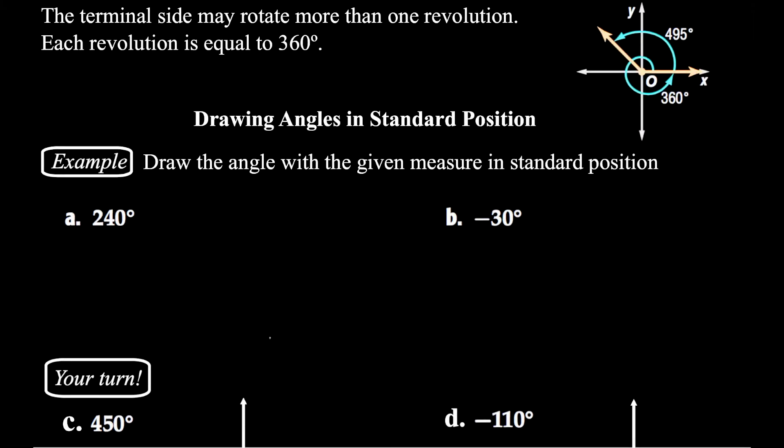The terminal side, we can have angles that are more than 360 degrees. That just means it rotates around more than one revolution. And each revolution around, you know probably already, is 360 degrees. So if you have an angle bigger than 360, that means you have more than one rotation. So in your homework, you may be asked to draw angles that are bigger than 360, and that's how you would show that.